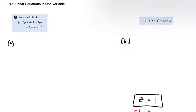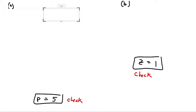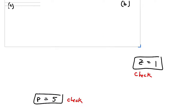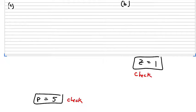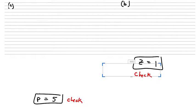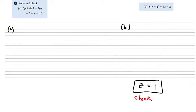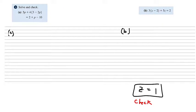Alright, so let's look at these next couple of examples. In this example three, part a and b, it says solve and check. So I'm going to rewrite - let's see. Okay, so let's look at part a. So let's hit solve and check. What I'm going to do is start by rewriting the original: 5p plus 4 times 3 minus 2p equals 2 plus p minus 10.